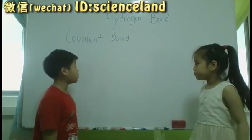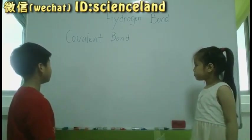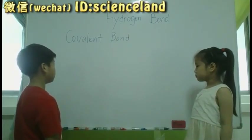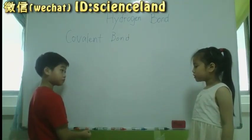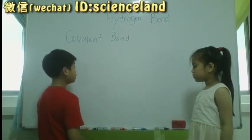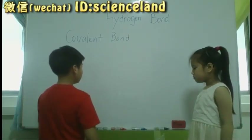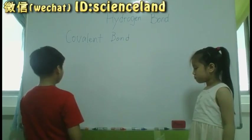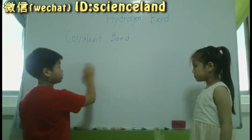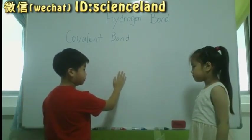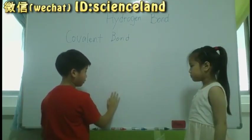So now we'll continue with covalent bonds. Molecule is only for covalent compounds, not ionic compounds.